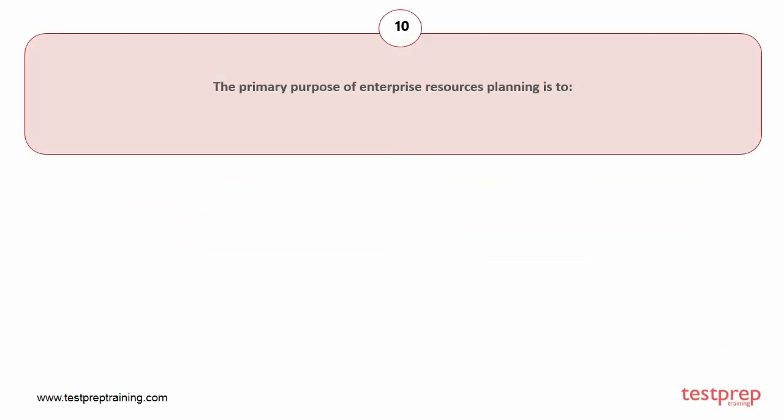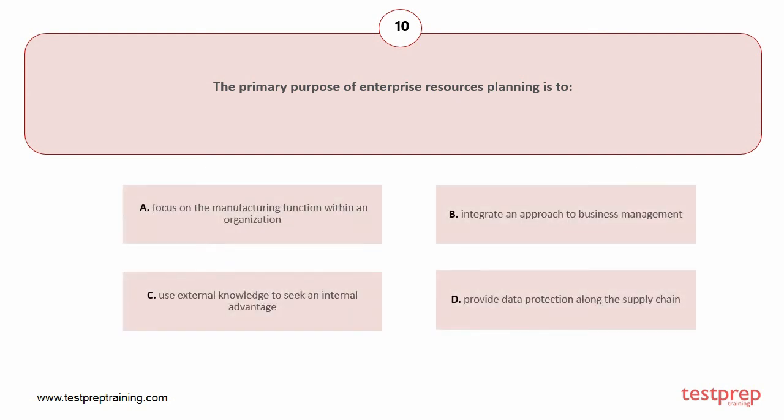Question number ten: The primary purpose of enterprise resource planning is to — your options are: A) focus on the manufacturing function within an organization, B) integrate an approach to business management, C) use external knowledge to seek an internal advantage, D) provide data protection along the supply chain. The correct answer is option B.